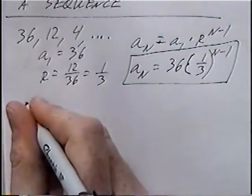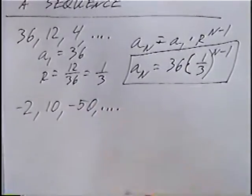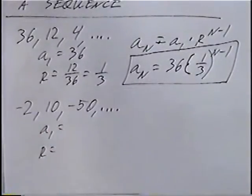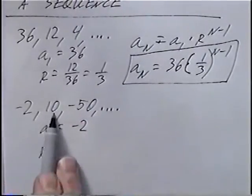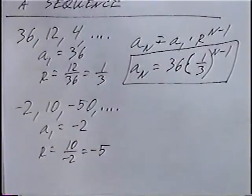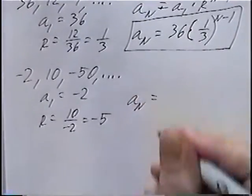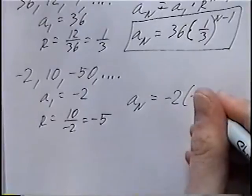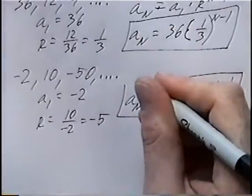The next sequence is negative 2, 10, negative 50, dot dot dot. A sub 1 is negative 2. The rate is the second number divided by the first: 10 over negative 2, which equals negative 5. The equation is: a sub n equals negative 2 times (negative 5) to the exponent n minus 1. The exponent is always n minus 1 for geometric sequences.